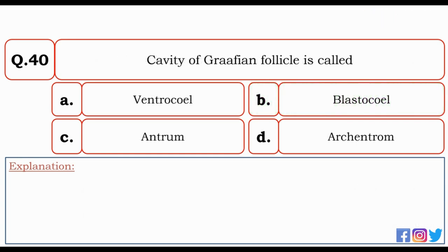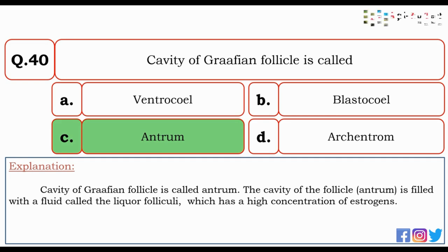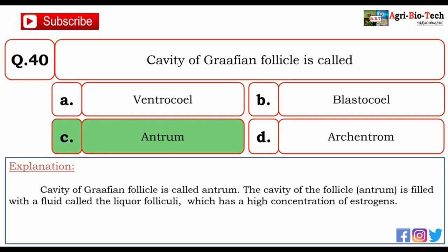Next question: cavity of the Graafian follicle is called — ventricle, blastocoel, antrum, or archentron? The correct option is C — antrum. The cavity of the Graafian follicle is called the antrum, and it is filled with a fluid called liquor folliculi, which has a high concentration of oestrogens.